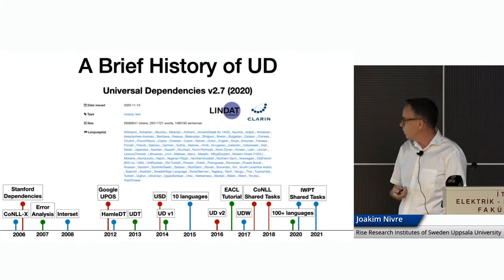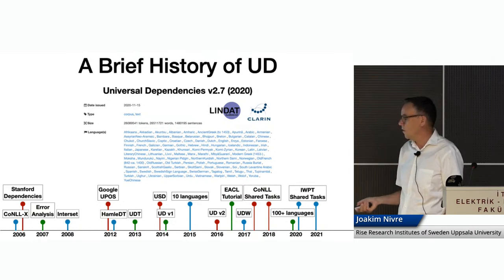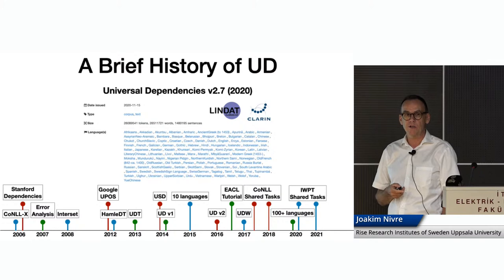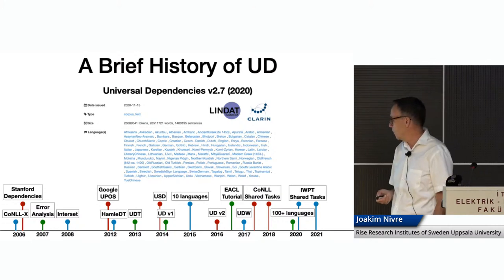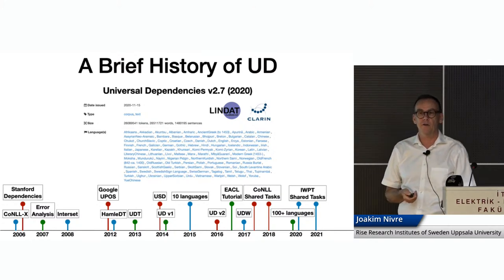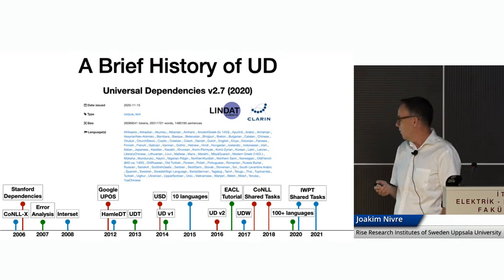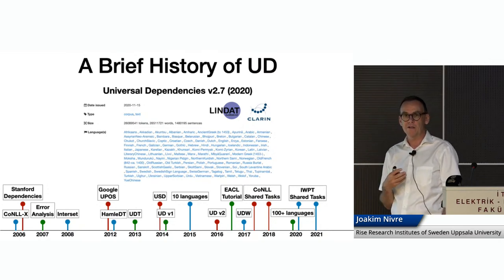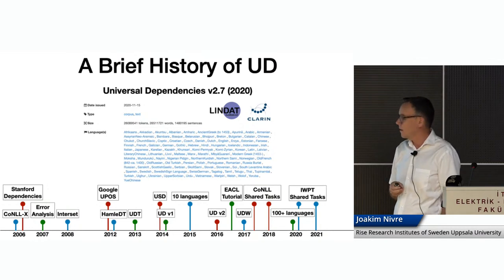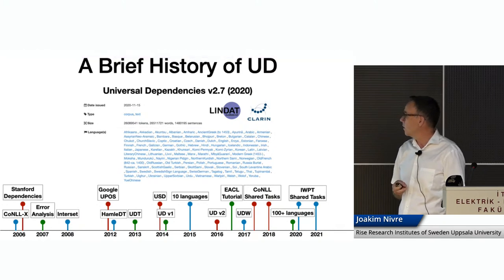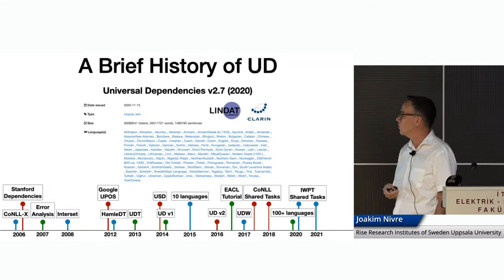In 2020, we reached the important milestone of having more than 100 languages in UD. We also saw the launch of two shared tasks co-located with IWPT, the parsing conference, this time focusing on parsing into enhanced dependencies — a richer representation available for a subset of the languages in UD. And then last year, we introduced some new policies that I will briefly return to later on.